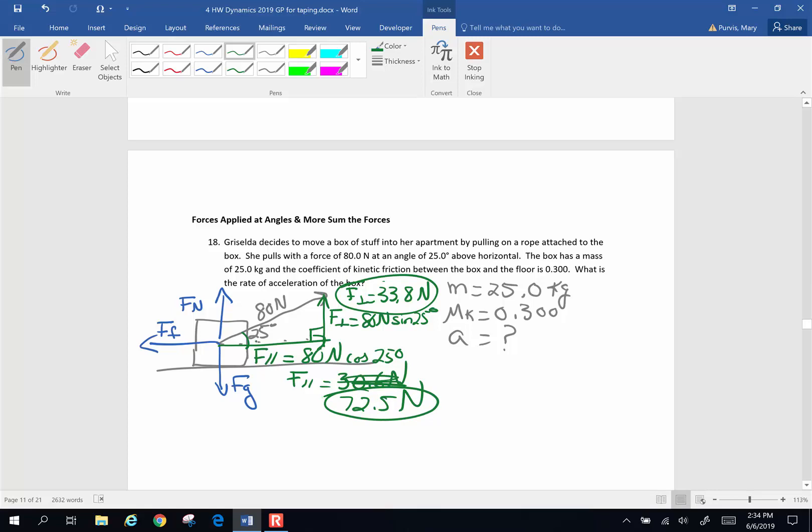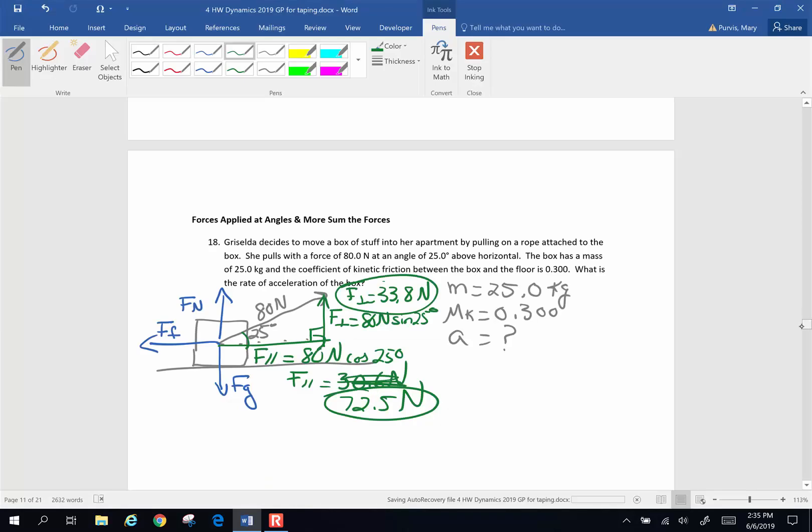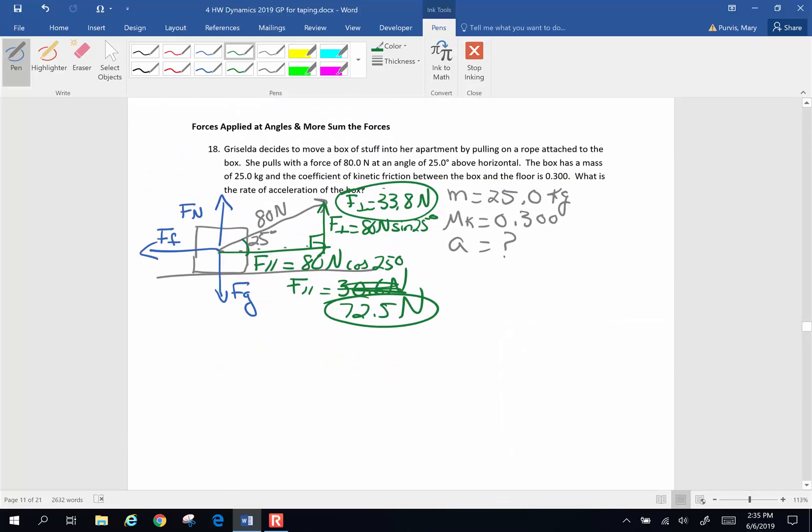Now that we've got all of our forces, we're going to sum the forces vertically and horizontally. In the horizontal direction, we have to ask ourselves: do they equal 0 or ma? Well, we're asked to find acceleration, so they're going to equal ma. Vertically, up and down, they equal 0. Seldom are we going to have things that don't equal 0 because a lot of times we have stuff that's just sitting on a surface.